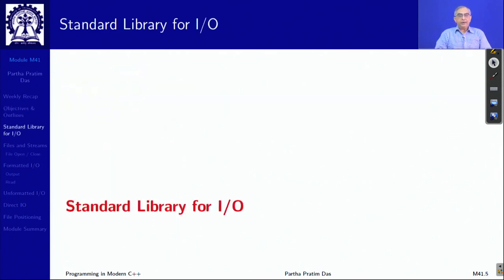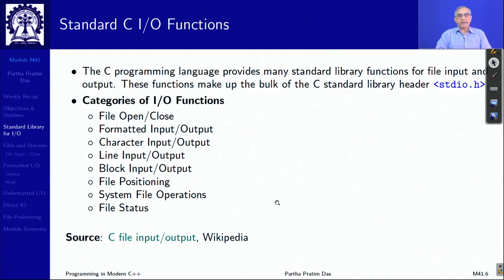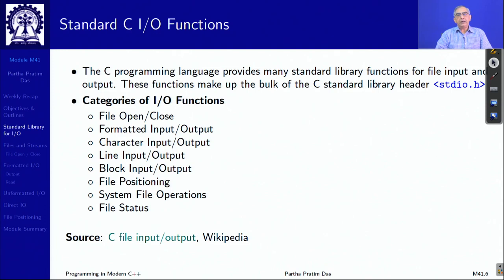In C, the language itself does not have any support for input/output. I/O is provided entirely through the C standard library, which has the header stdio.h that needs to be included for any file, terminal, or printer I/O operations. It provides many functions broadly categorized as opening and closing files, formatted and unformatted I/O, block I/O, file positioning, file status checking, and system file operations.